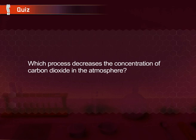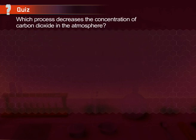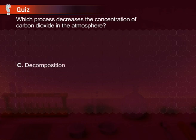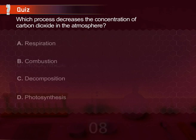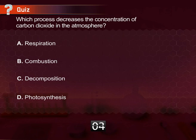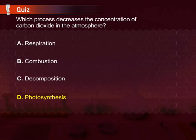Which process decreases the concentration of carbon dioxide in the atmosphere? A. Restoration, B. Combustion, C. Decomposition, D. Photosynthesis. The answer is D — Photosynthesis. This is because the photosynthesis process requires carbon dioxide in the atmosphere to make food and releases oxygen.